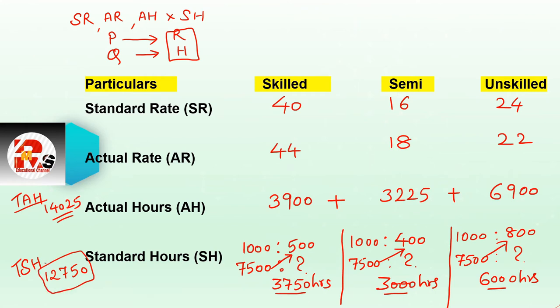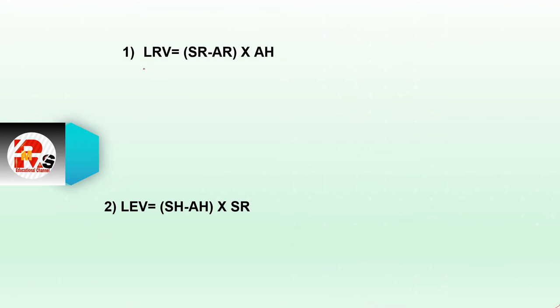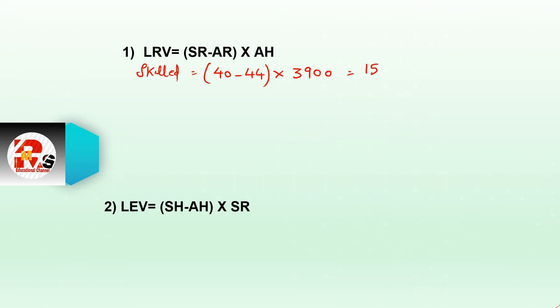Now let's present labor rate variance directly. First is skilled: standard rate 40 minus actual rate 44, multiplied by actual hours 3900. Answer = negative 15,600, that will be adverse.